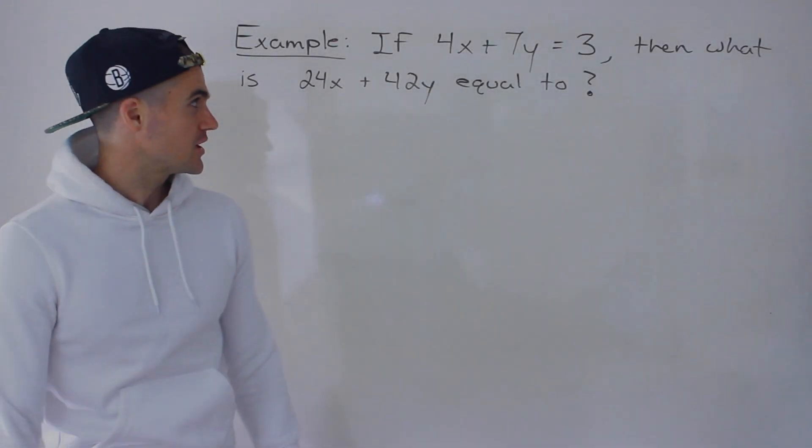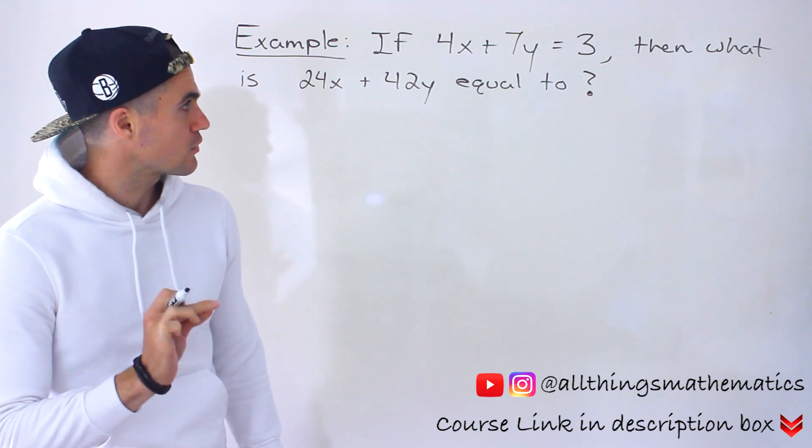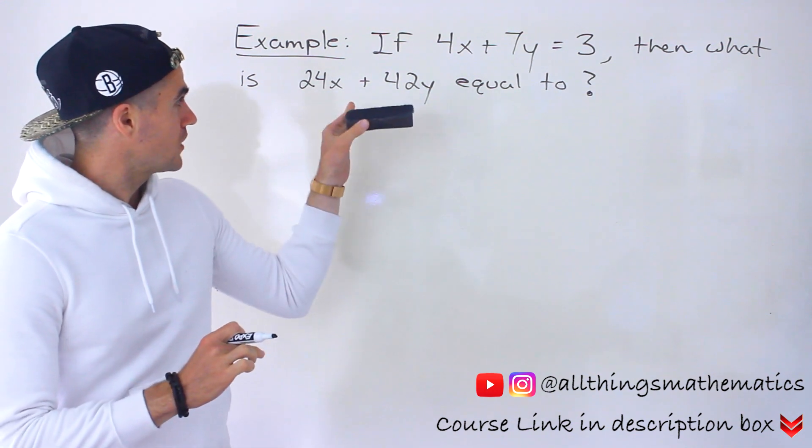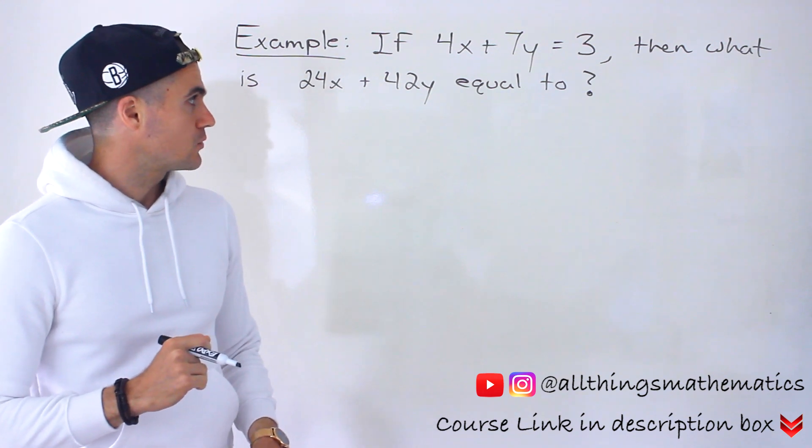What's up everyone? Welcome back. Patrick here. Moving on to the next question. So we're told if 4x plus 7y is equal to 3, then what is 24x plus 42y going to be equal to?